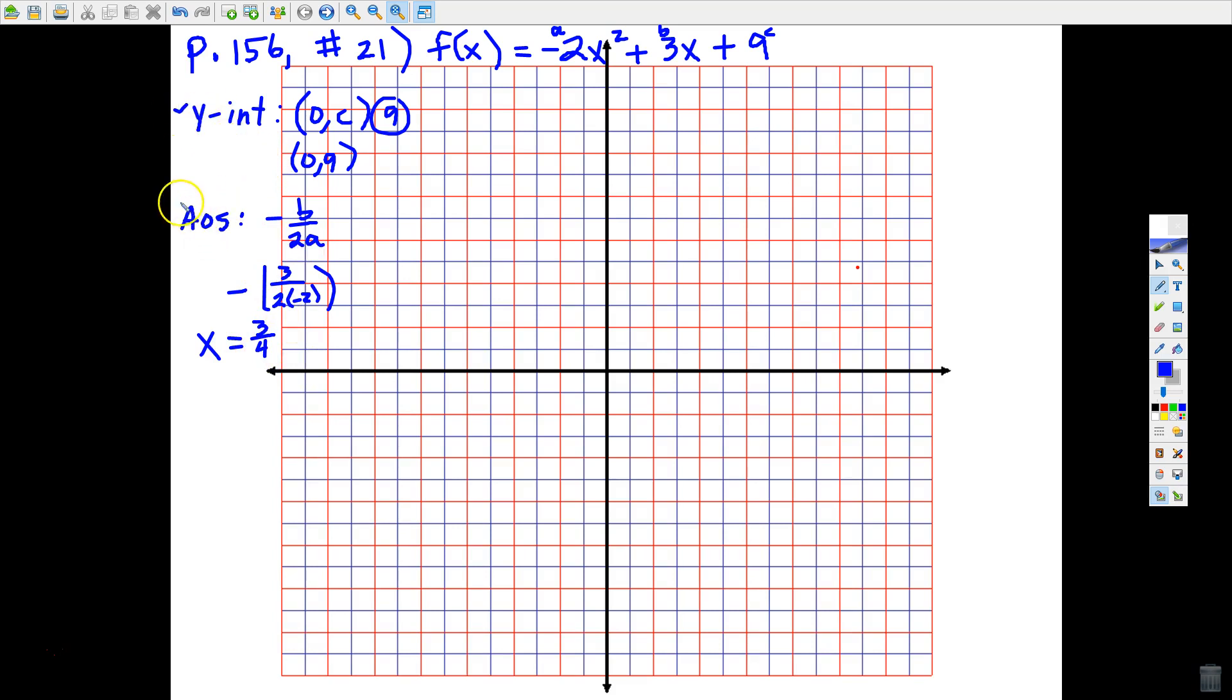So we've got the y-intercept, we've got the equation for the AOS. Now the next thing says, what is the x-coordinate of the vertex? Well, if you know the AOS number, you got it, because it's the same number. The x-coordinate of the vertex is 3 fourths. So now we're ready to make a table.